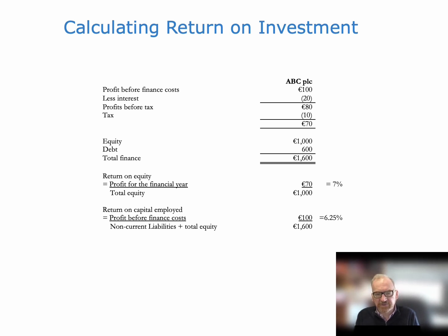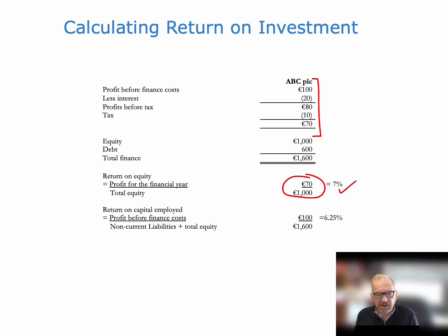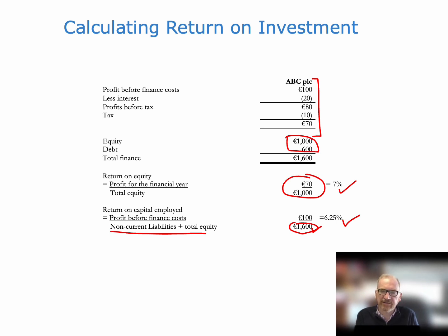How do you calculate this? We've got an income statement here. Profit before finance costs, less interest of 20, gives us profit before tax of 80. Tax is 10, which gives us 70 — profit for the financial year. Equity is 1,000, debt is 600, and total capital employed is 1,600. So return on equity is profit for the financial year over total equity: 70 over 1,000, or 7%. Return on capital employed is profit before finance costs of 100 over total capital employed of 1,600, which is 6.25%.